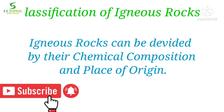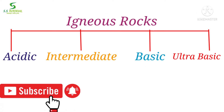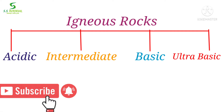There are different types of igneous rocks. Igneous rocks can be classified by their chemical composition and place of origin. On the basis of chemical composition, igneous rocks can be classified into 4 types. They are acidic igneous rocks, intermediate igneous rocks, basic igneous rocks, and ultrabasic igneous rocks.